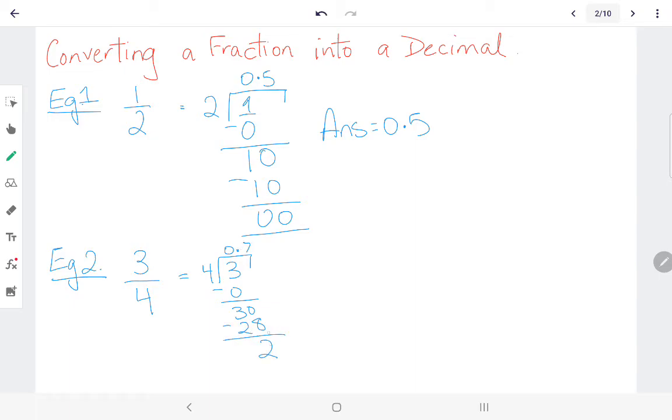So four into thirty is seven. Seven times four is twenty-eight. Thirty take away twenty-eight is two. Once you already added a point in the quotient, you can add any number of zeros coming down to work out your answer.